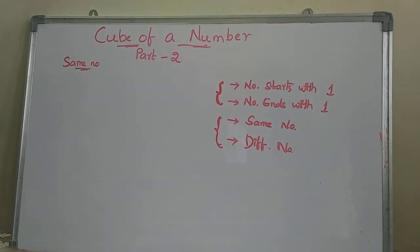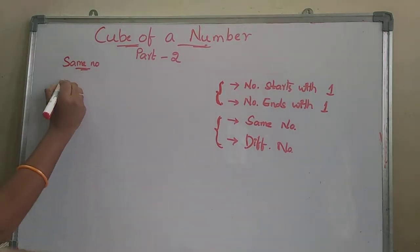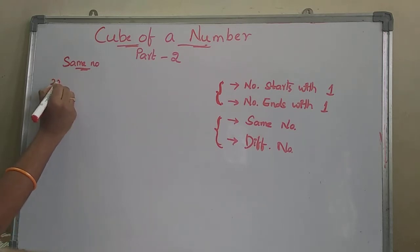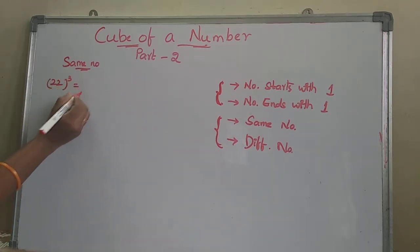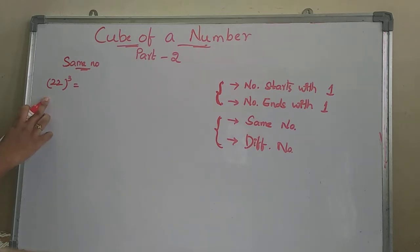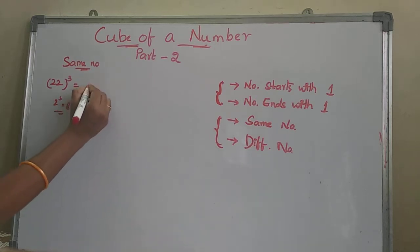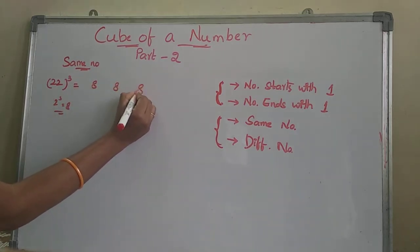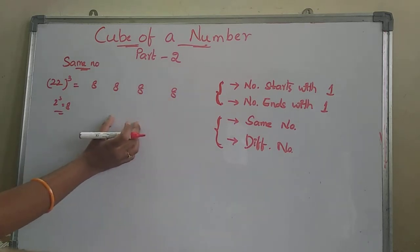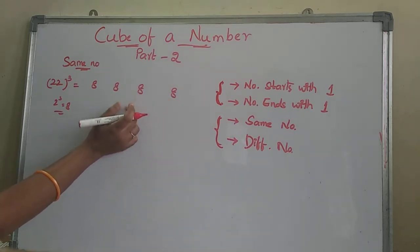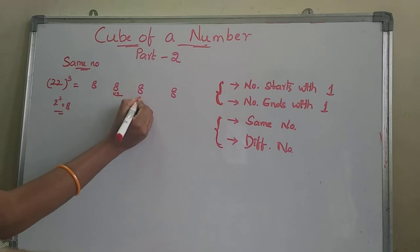First, we have same numbers. Take one example: finding the cube of 22. For this, what is 2 cube? 2 cube is 8. Write this 8 four times. After that, the middle 2 numbers are multiplied by 2.